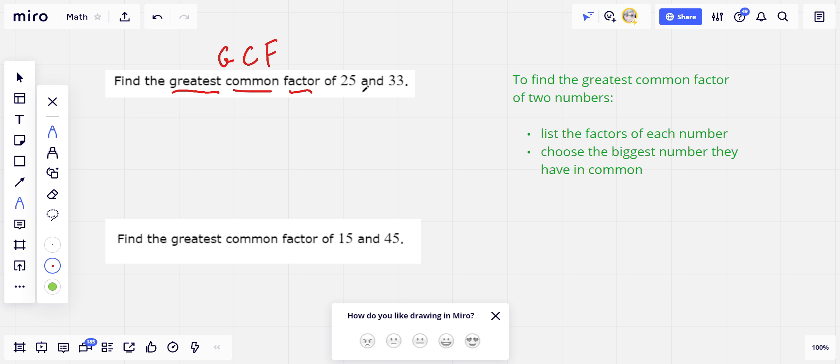The way to do this, if you're trying to find the greatest common factor of two numbers, is to list the factors. And then just look at the two lists and pick out the biggest one that they have in common.